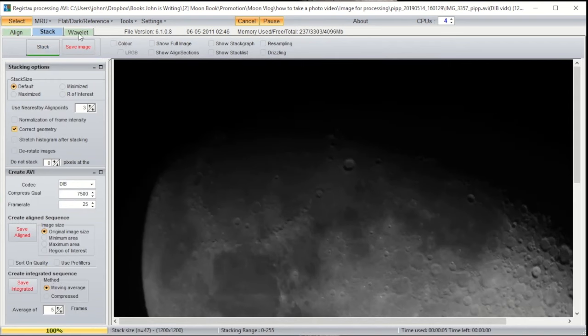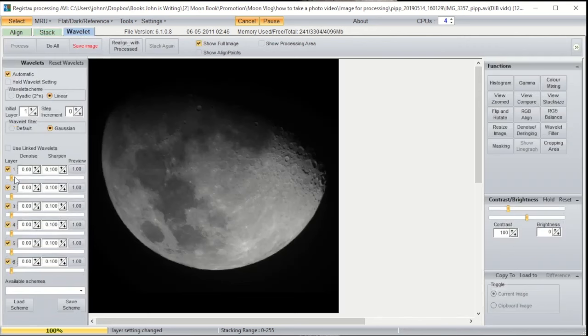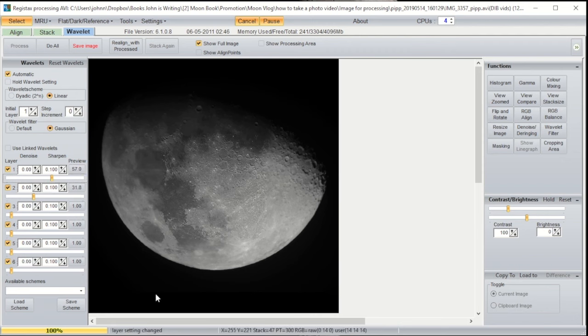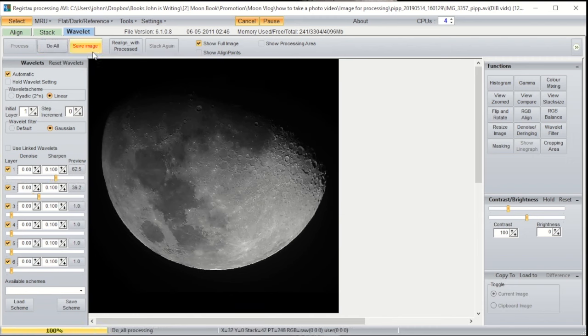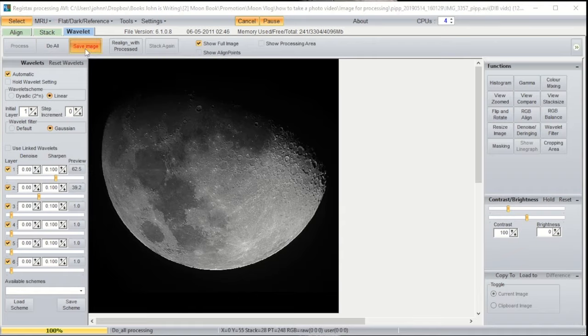Now this is where the magic happens. Click wavelet and slide these sliders over until the moon looks amazing. Slide them too far and the image will become noisy. Note that Registax is only processing the center of the image. To do the entire image, select do all. When you're happy with the image, select do all and then save.